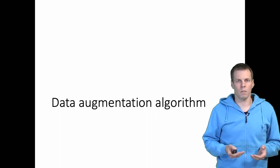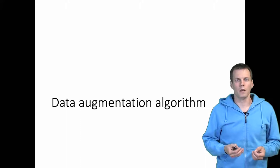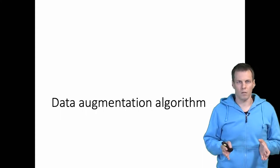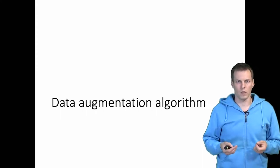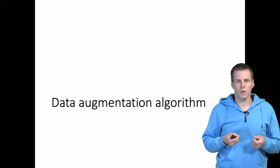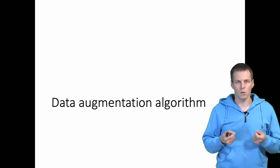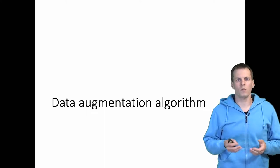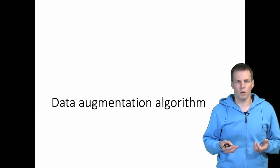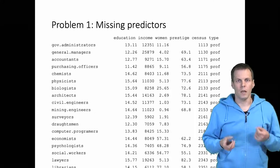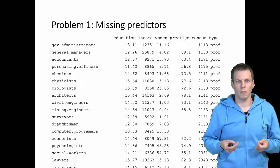The data augmentation algorithm is the most commonly used technique for doing the actual imputations in a multiple imputation analysis. You don't need to understand the technical details of this algorithm or the basis statistics on which it's based, but understanding the basic principle of what the algorithm does and why we use it is useful, because sometimes the algorithm does not converge and then you need to make informed decisions about what to do. Let's take a look at what problems the data augmentation algorithm solves.